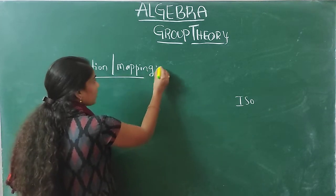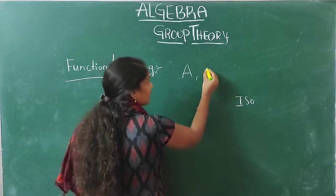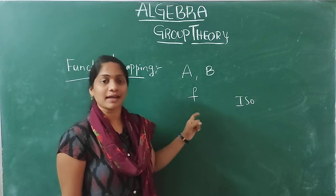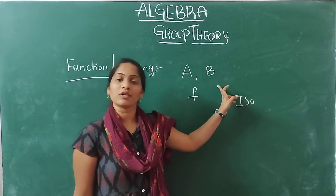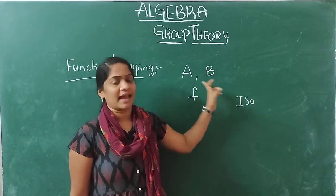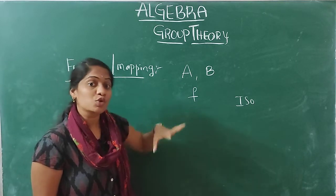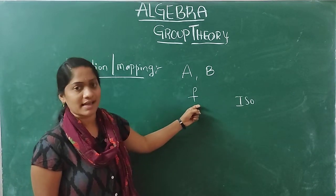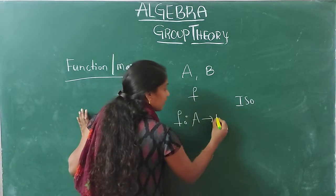Coming to the function: you have to take two non-empty sets A and B. There exists a correspondence denoted by f which associates every element of A to every element of B. This correspondence f is known as the function or mapping, which is defined as f from A to B.